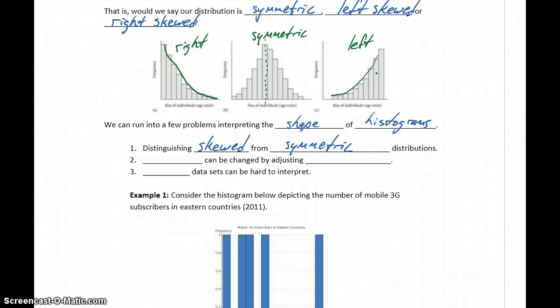But the question we get into with certain distributions is, how skewed is skewed? So if it's close to being symmetric, if it gets a little bit further from being symmetric, we can end up with distributions that aren't quite these clear-cut answers. We can have sort of some in-between distributions.